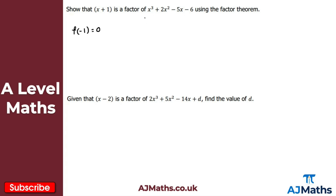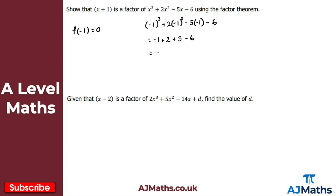So all I need to do now is substitute minus 1 into this cubic polynomial, and it should equal 0. So we get minus 1 cubed plus 2 lots of minus 1 squared minus 5 lots of minus 1 minus 6. Minus 1 cubed is minus 1; minus 1 squared is positive 1, times 2 gives positive 2; minus 5 times minus 1 gives positive 5; and then minus 6 at the very end. So minus 1 minus 6 is minus 7, plus 2 plus 5, and that just cancels to give 0.